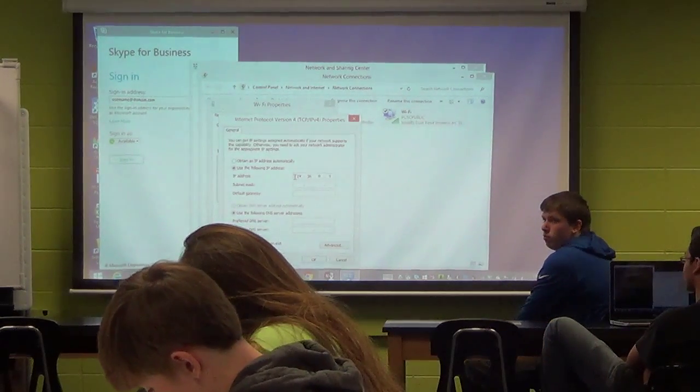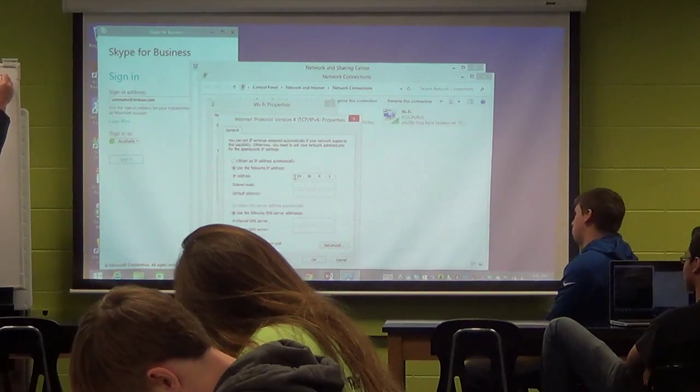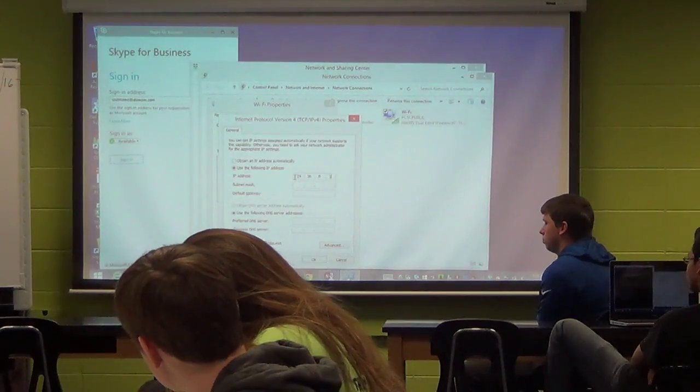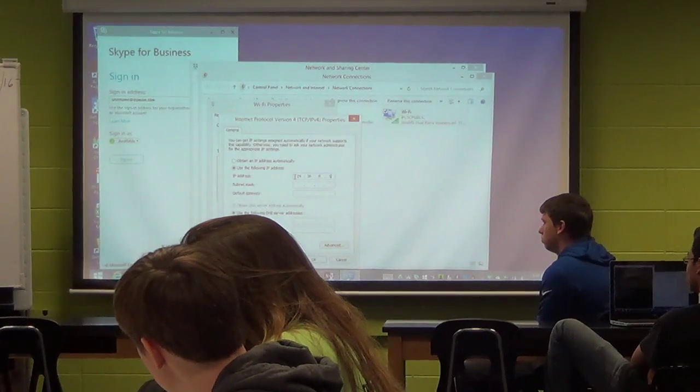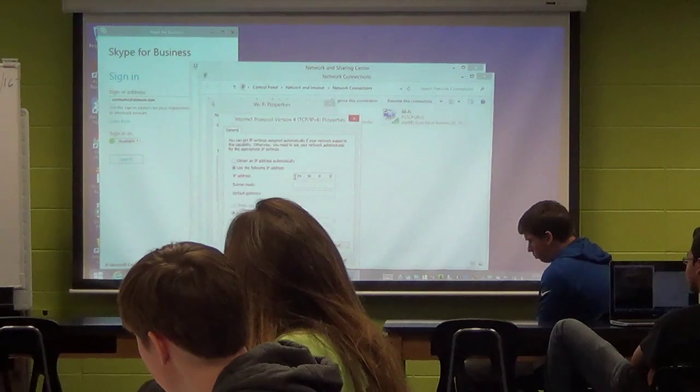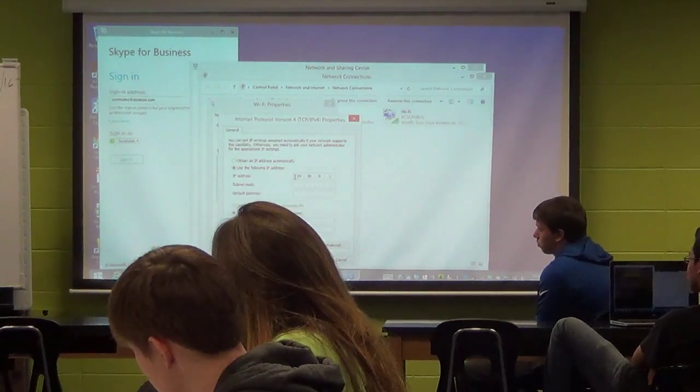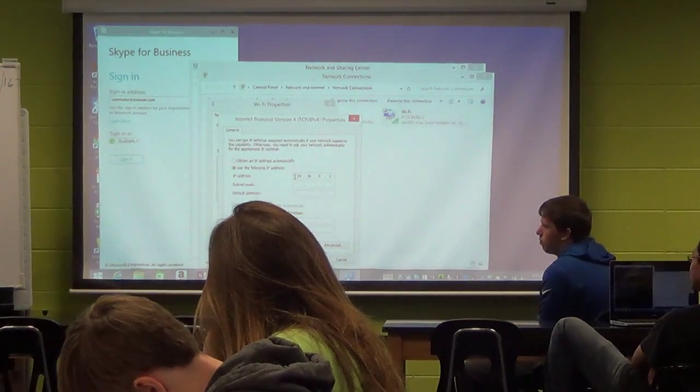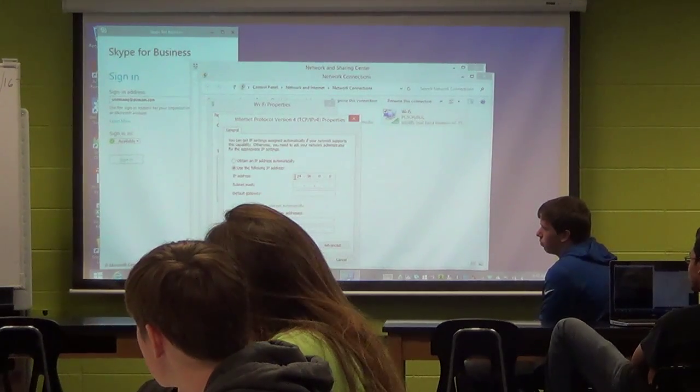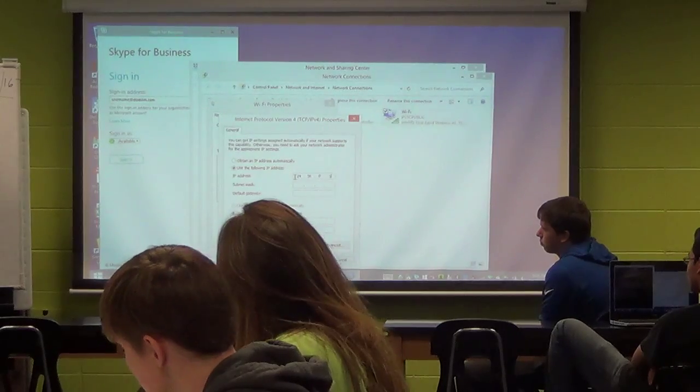172.16.0.0 with a subnet mask of 16 bits, which means what is the subnet mask? Jessica? 255.255.0.0. So this network address is reserved for private IP addresses behind the firewall, not on the internet. Give me another one.